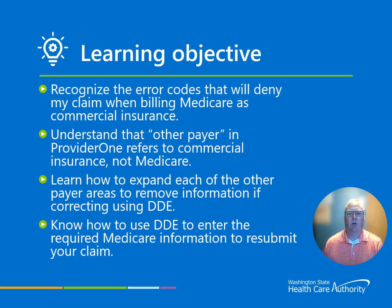Let's cover the goals of this video and the outcome we hoped for. You billed Medicare as primary and now have commercial insurance denials that make no sense for the claim that was submitted. In this presentation, the following objectives will be covered. First, recognize the error codes that will deny my claim when billing Medicare as commercial insurance. Second, understand that 'Other Payer' in Provider One refers to commercial insurance, not Medicare.